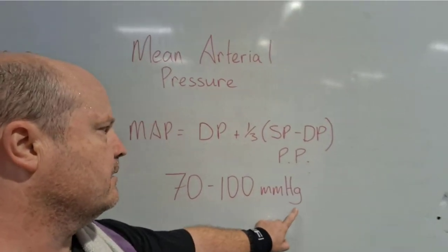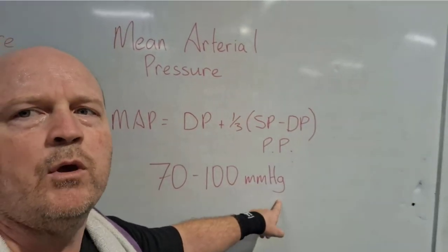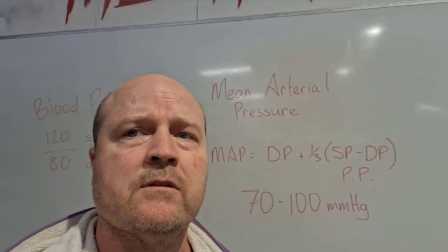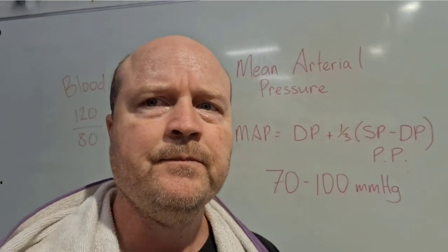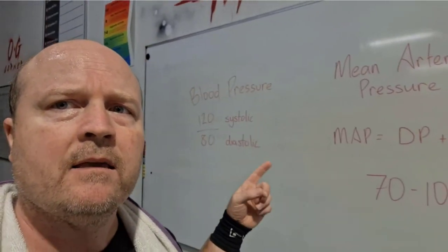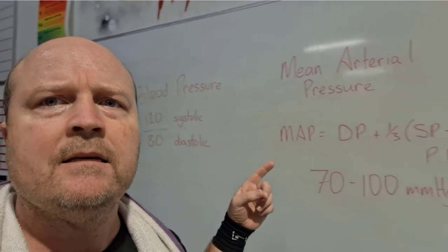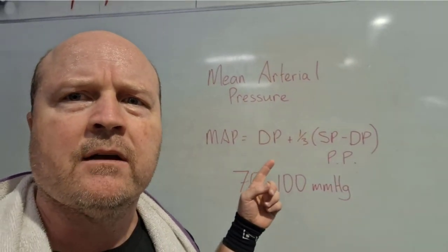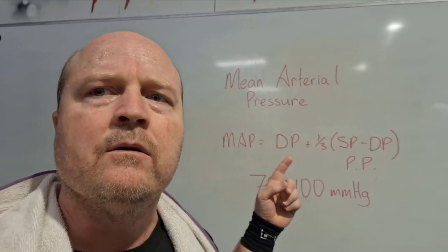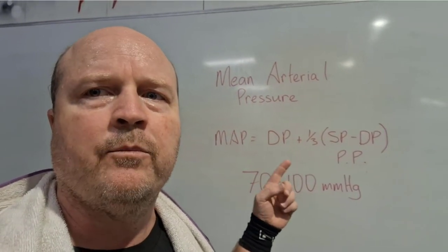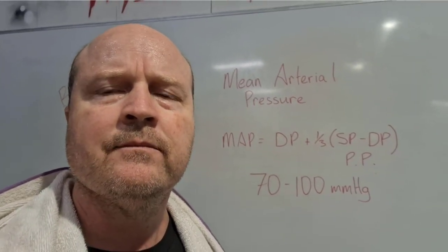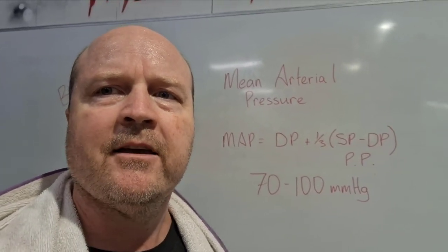So whenever you see mmHg, that's millimetres of mercury. They're both useful measures of cardiovascular health. Blood pressure is taken more routinely, and mean arterial pressure we tend to use on our more critical patients. Alright team, happy studying!